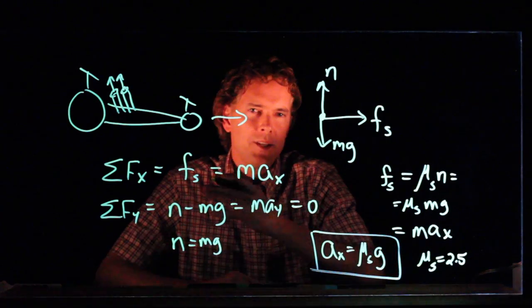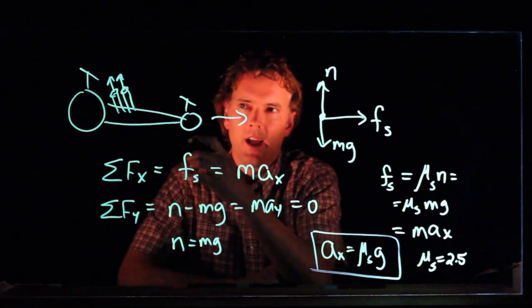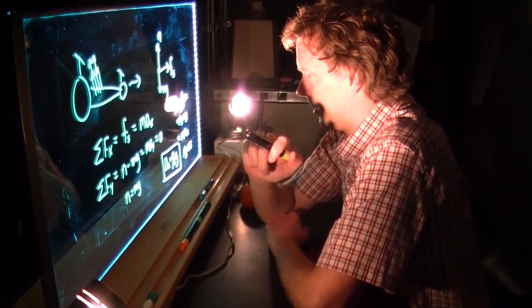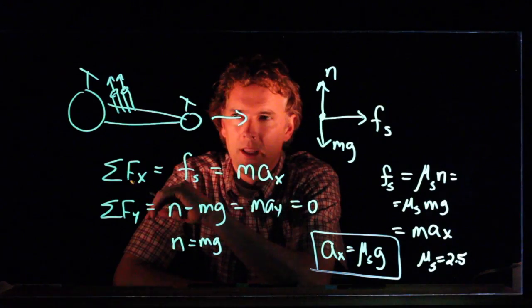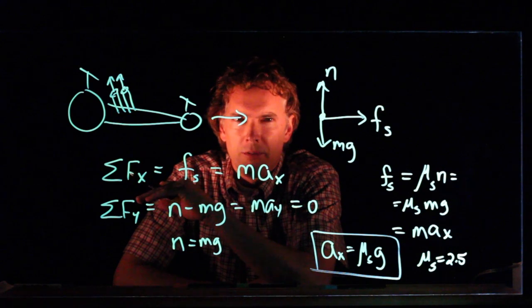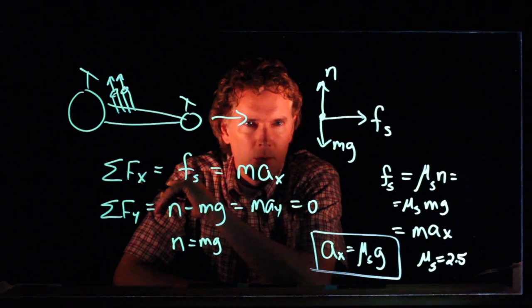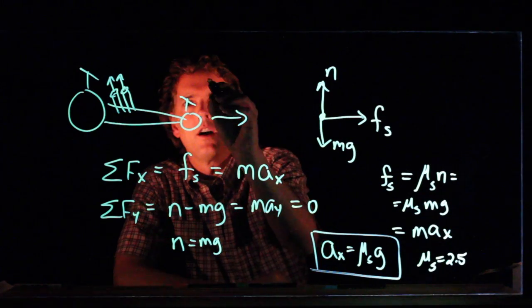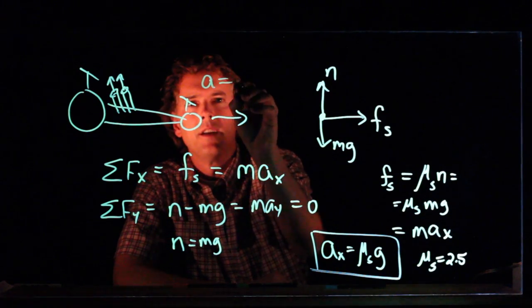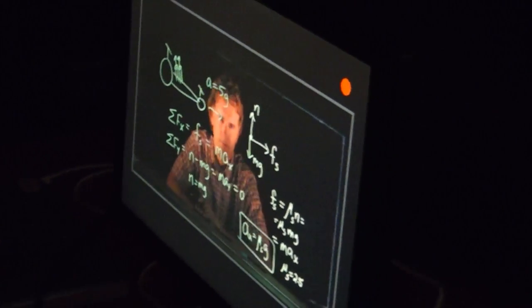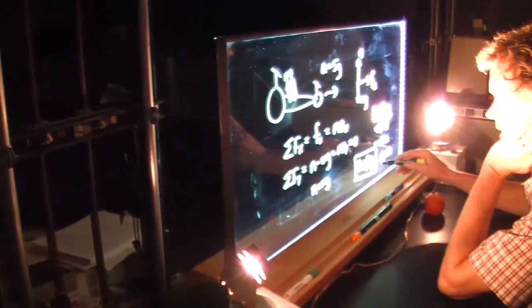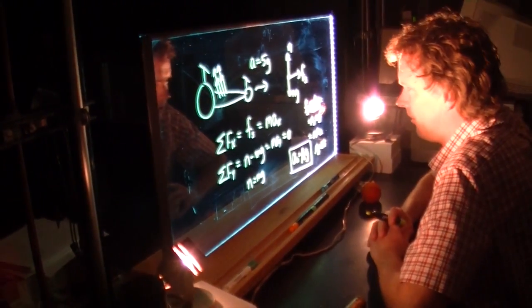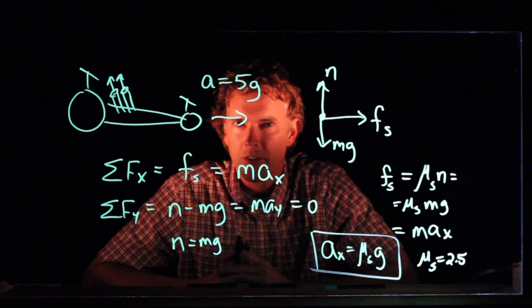When we talked about dragsters, we said they go 0 to 300 miles per hour in under 4 seconds. These are real numbers. We're not making those up. 0 to 300 miles per hour in under 4 seconds. What is that acceleration? It turns out that the acceleration of a dragster is about 5g, 5 times gravity. And yet, we just said the most you could do is 2.5 times g. So somewhere we are off by a factor of 2.